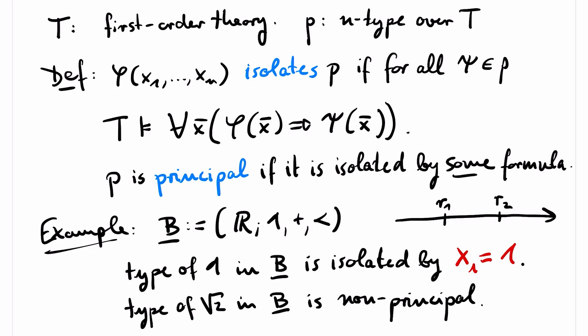To see this, note that between r1 and r2 there is a rational number q. So using the constant 1 and addition and the order, we can cook up a formula that says x1 is larger than q. And this formula is then satisfied by r2 but not by r1, showing that r1 and r2 have a different type.